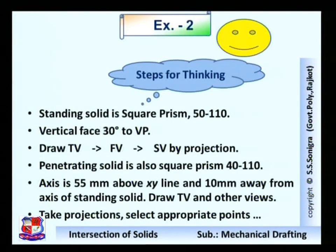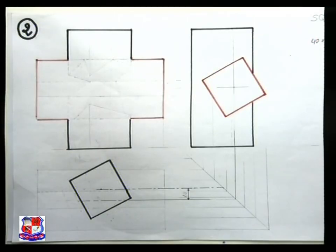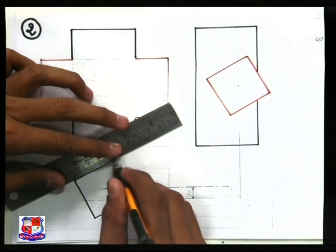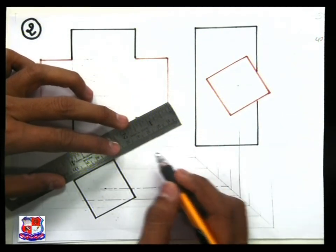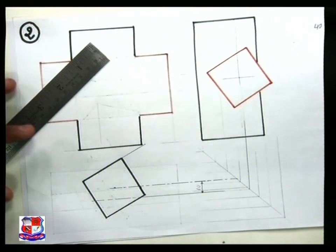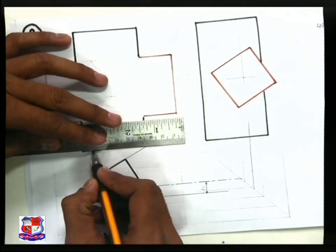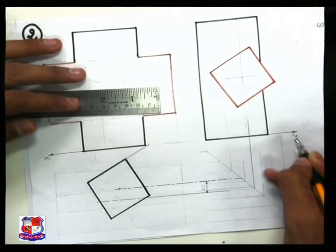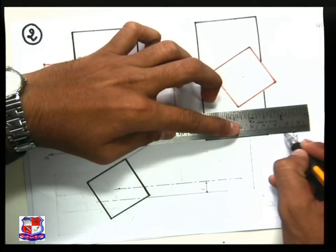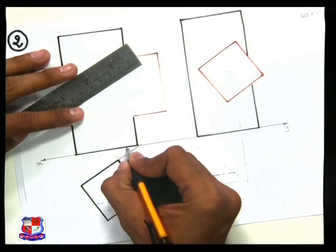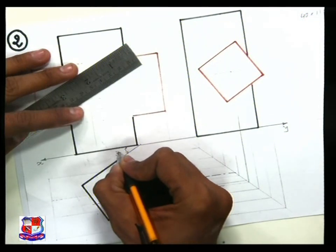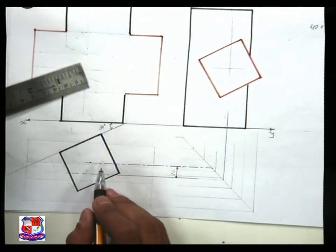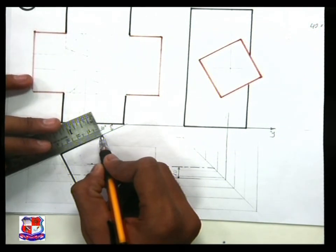For problem number 2, draw the XY line. The face makes an angle of 30 degrees with the XY line. Draw a line at 30 degrees to the XY line — this is the 30 degree line. After drawing this line, mark two points along it at a distance of 40 mm — one point here and another point there. Taking this as one side of the square, complete the square with 40 mm sides.